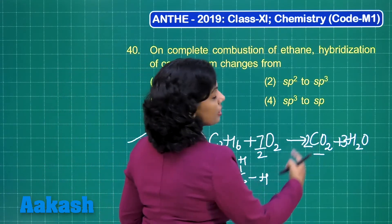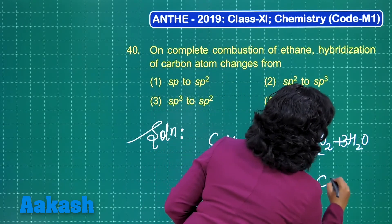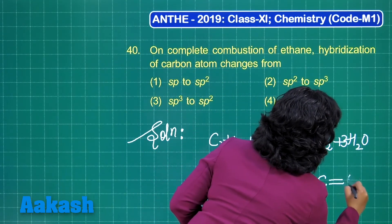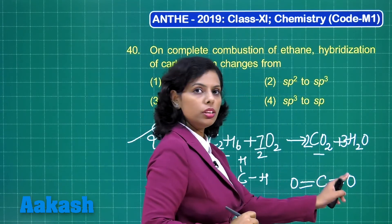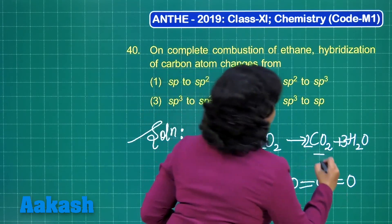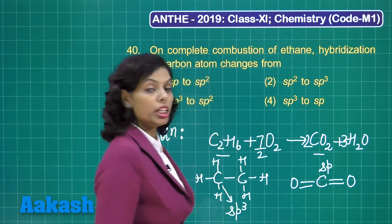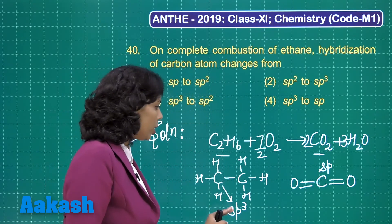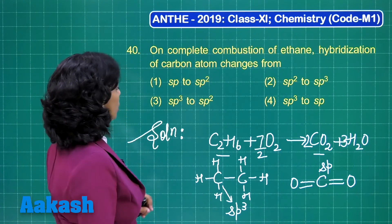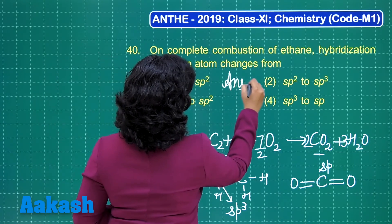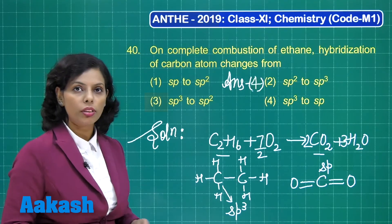In the product, carbon dioxide, there is a double bond between carbon and oxygen, so the hybridization of carbon is sp. The change in hybridization is from sp³ to sp, and that is why the correct option is option 4.